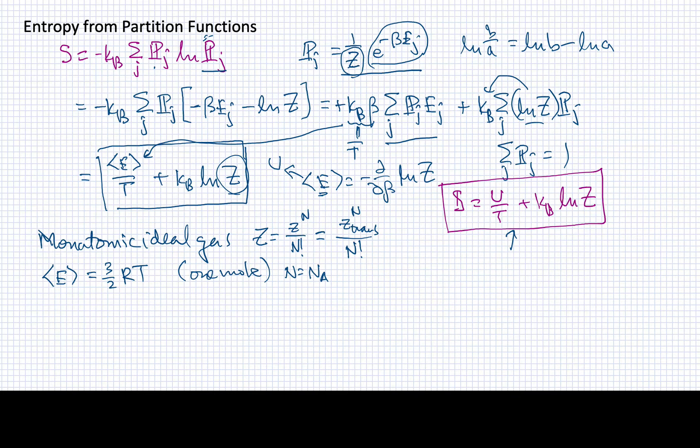What does that imply about the rest of this entropy? I know that the average energy over temperature is just this over temperature, so it's going to be three halves times R.